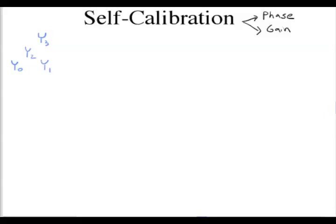Typically for an array of antennas, we cross-correlate all pairs, which means we get visibilities for 0 paired with 1, 0 with 2, 0 with 3, 1 with 2, 1 with 3, and 2 with 3. These are all the cross-correlations that we measure on this array.